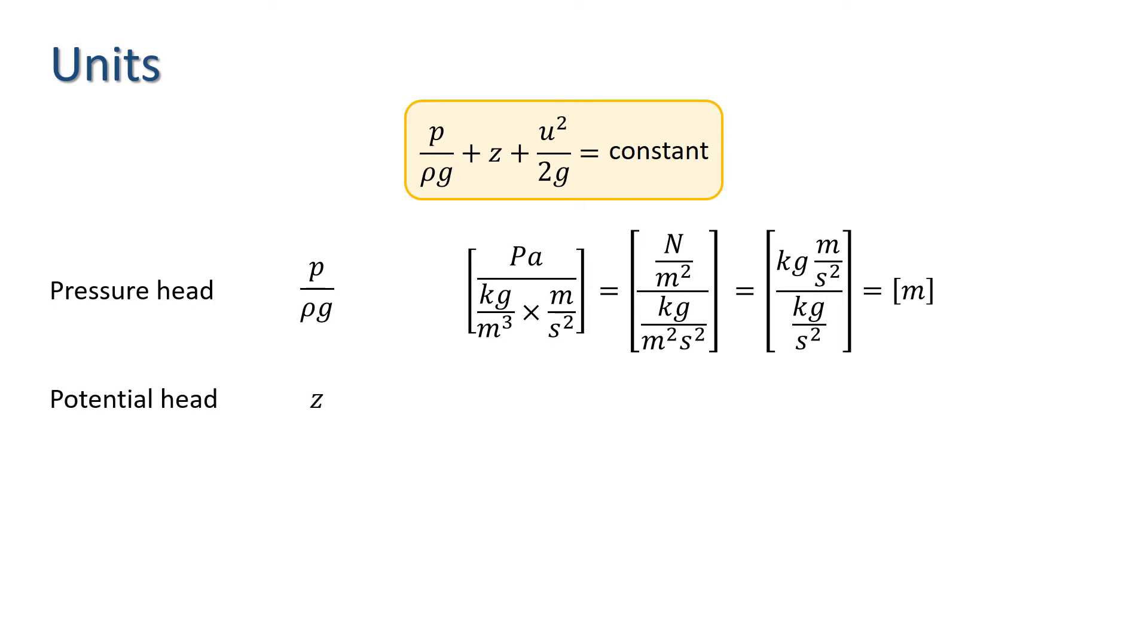The second term, the potential head, is in elevation, so that just has units of meters. And the third term, the velocity head, has units of meters per second all squared, divided by units of acceleration, meters per second squared, which again reduces to meters. So we can see that the terms are consistent with units of meters throughout.